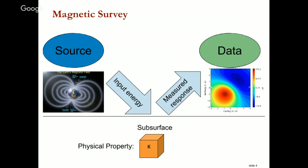In the magnetic survey, this is a characteristic picture we're going to see for every survey because every geophysical survey has the following: it has a source, that source puts energy into the ground, we have some physical property in the ground — in this case magnetic susceptibility — and then we measure a response. Energy travels through the Earth in a way that depends upon this physical property, giving rise to fields that can be measured at the Earth's surface or in the air.